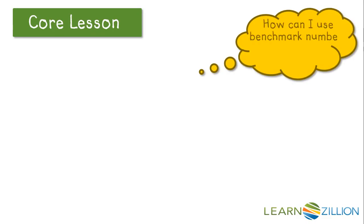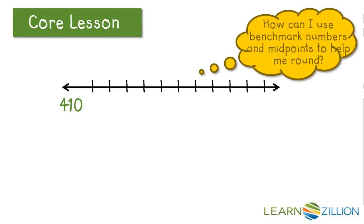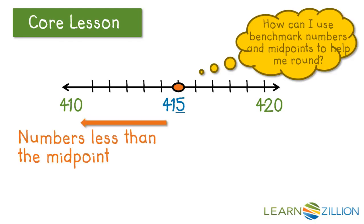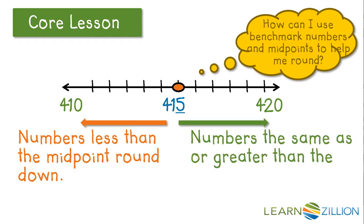Now let's think about how we can use the benchmark numbers and midpoints to help us round. On this number line, our benchmark numbers are 410 and 420, with a midpoint at 415. Numbers less than the midpoint round down. Numbers the same as or greater than the midpoint round up.